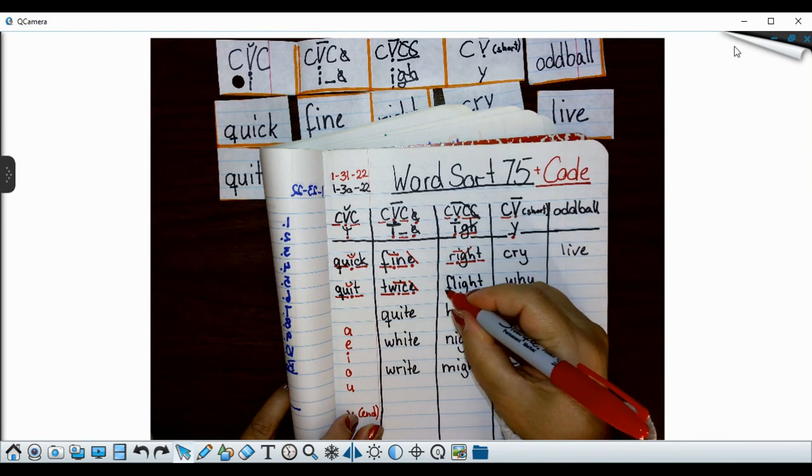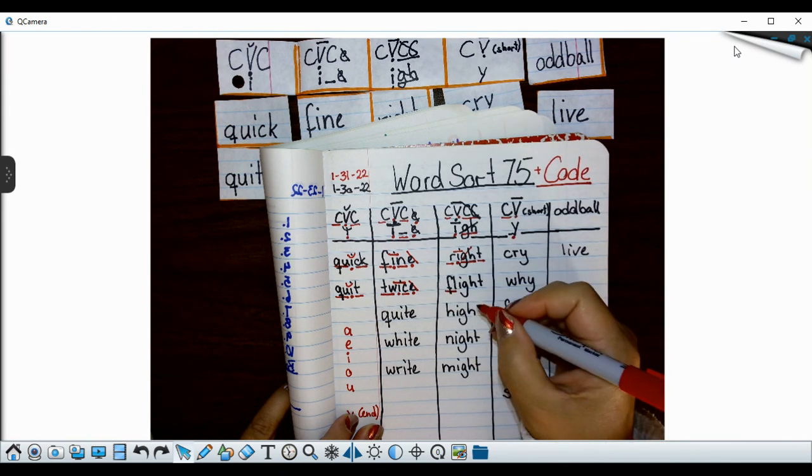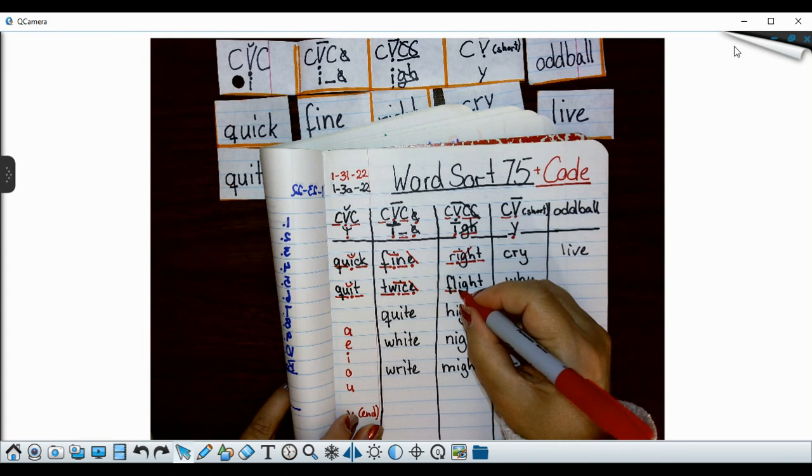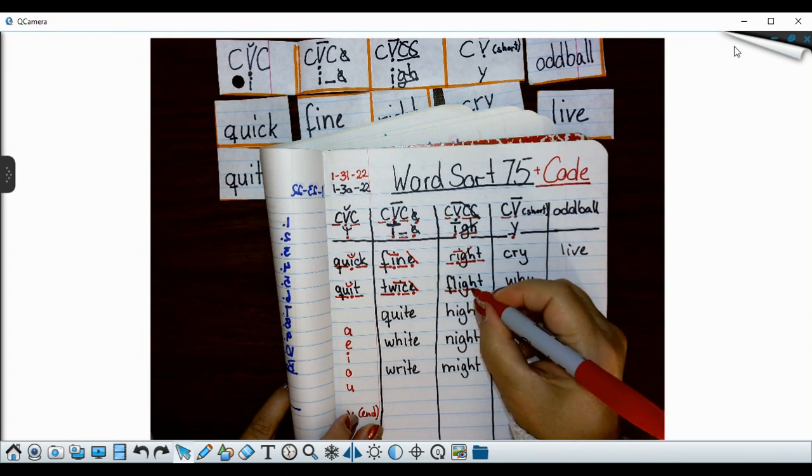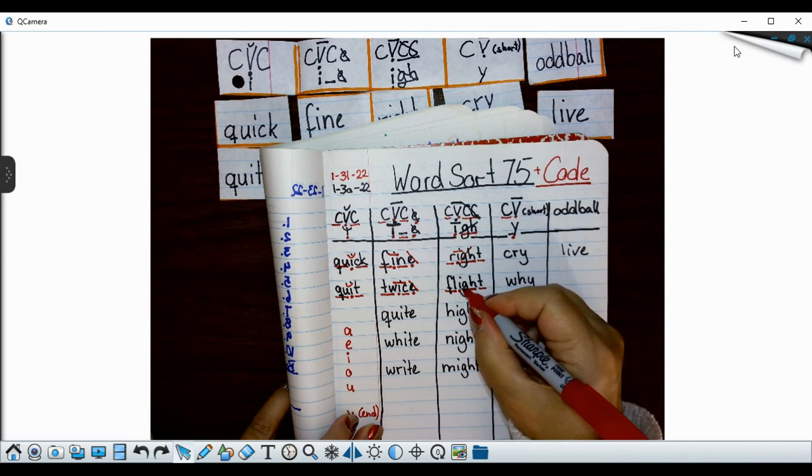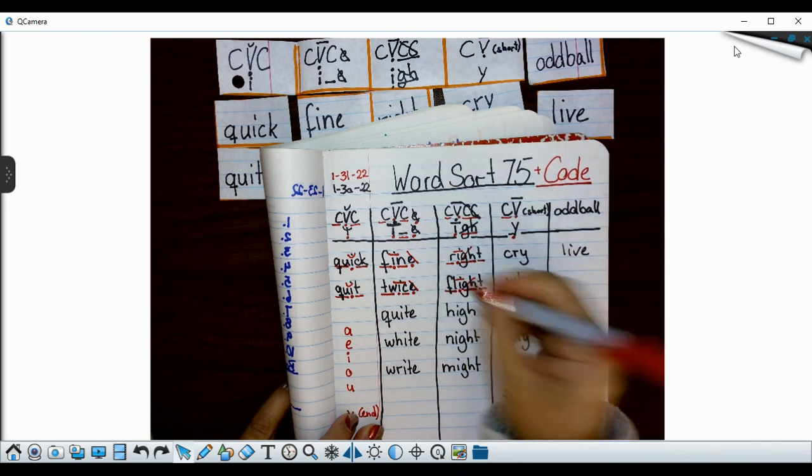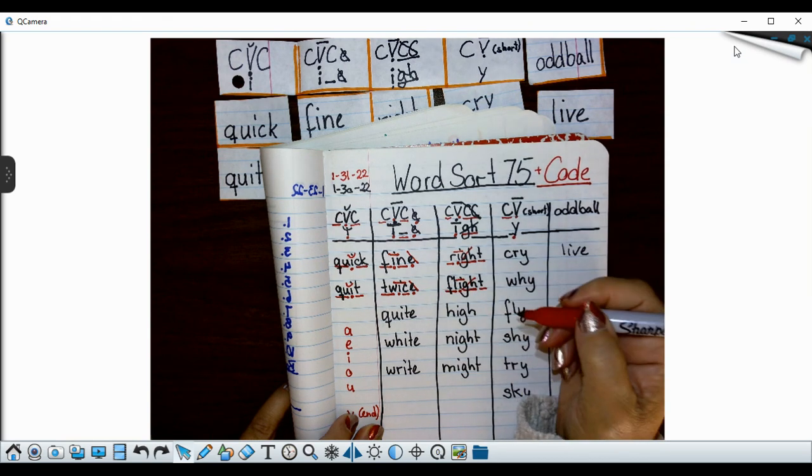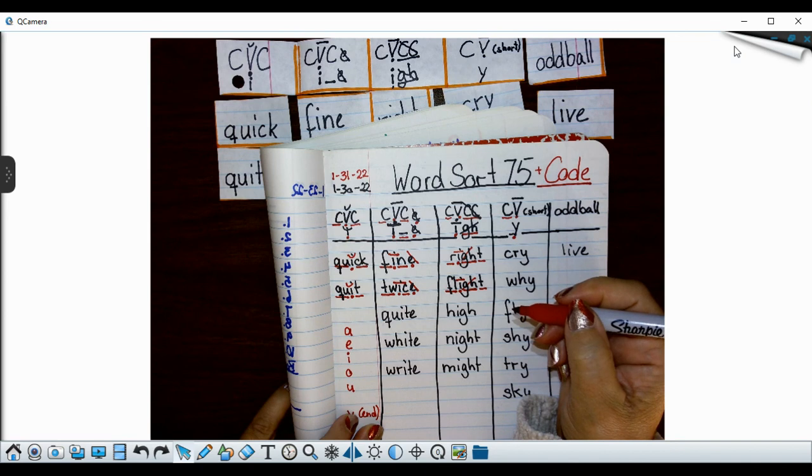Then I have my blend my L blend. I have my vowel my I. I have the silent G-H and I got my T as a consonant and since these are silent they make my vowel long. Yep it's in the right column. Go ahead and pause your video here and code the next three words.